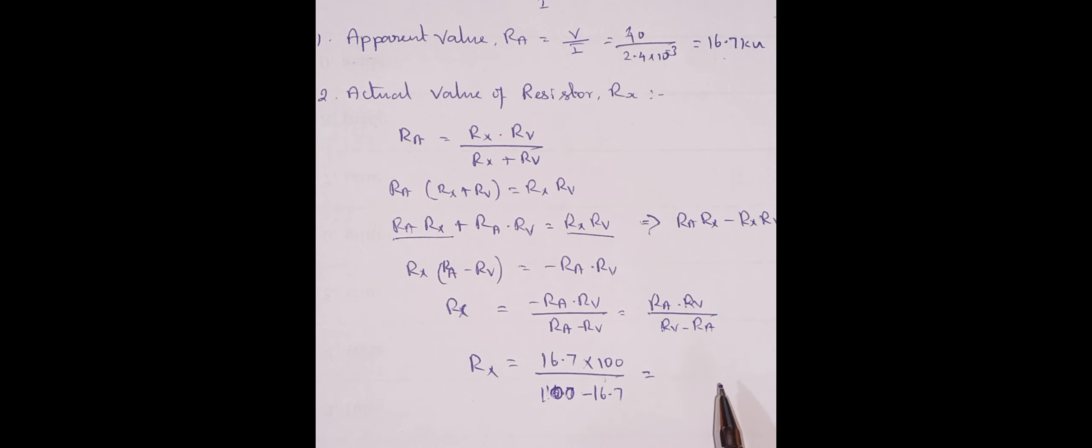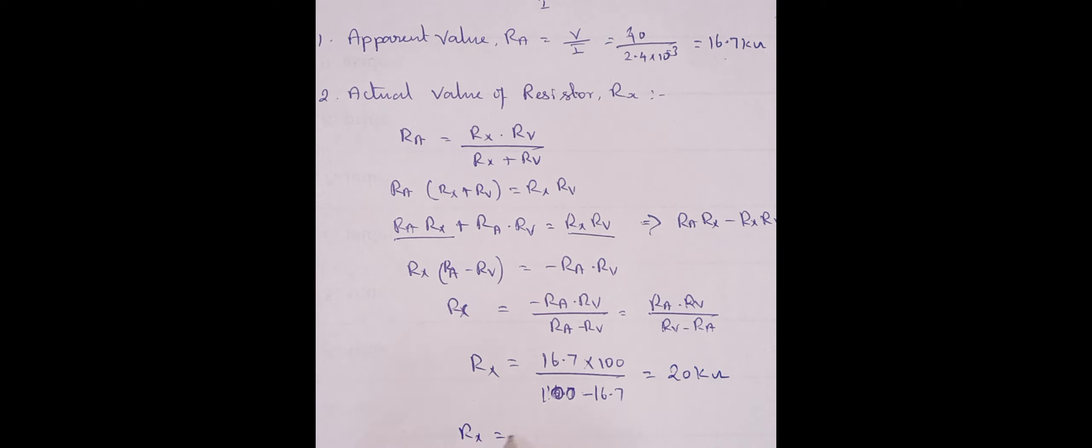So substituting this answer we will get Rx as 20 kilo-ohm. Okay, so this is the unknown resistance value, actual value. Okay, Rx is equal to 20 kilo-ohm.